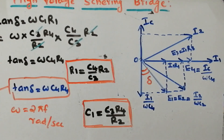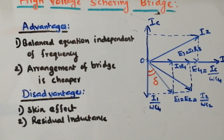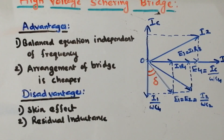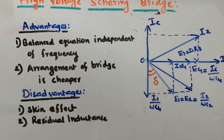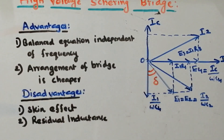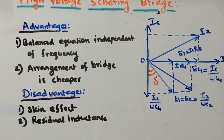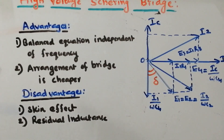Now let us understand the advantages and disadvantages of high voltage Schering bridge. When it comes to advantages: the balance equation is totally independent of frequency, so the error will be very less. Similarly, the arrangement of the bridge is very cheap — it is not too costly. These are the major advantages of the Schering bridge.